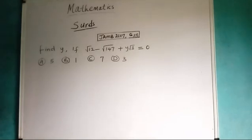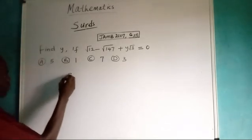We have another question to solve. January 2007 question 3, and we are asked to determine the value of y if √12 - √147 + y√3 = 0. We have options and we are expected to see B1 at the end of the solution.